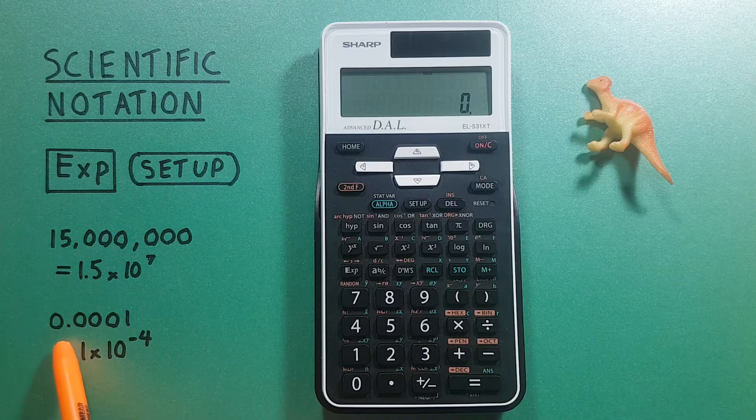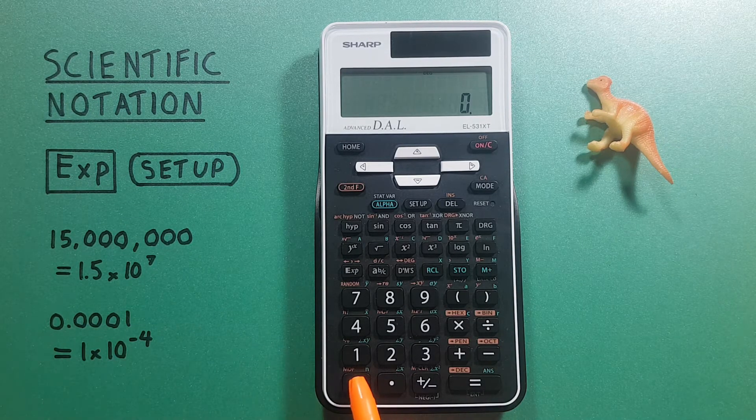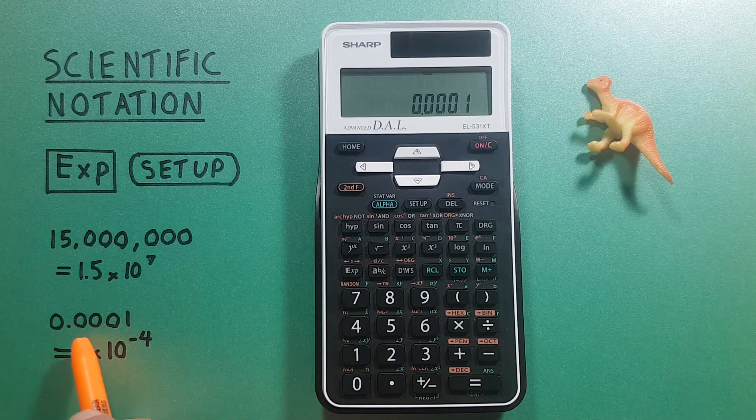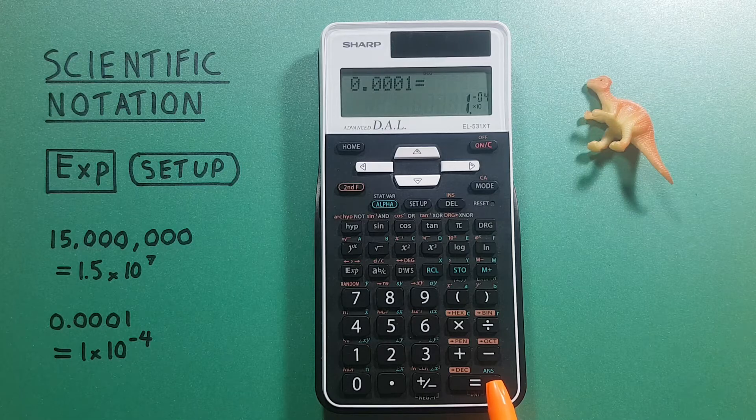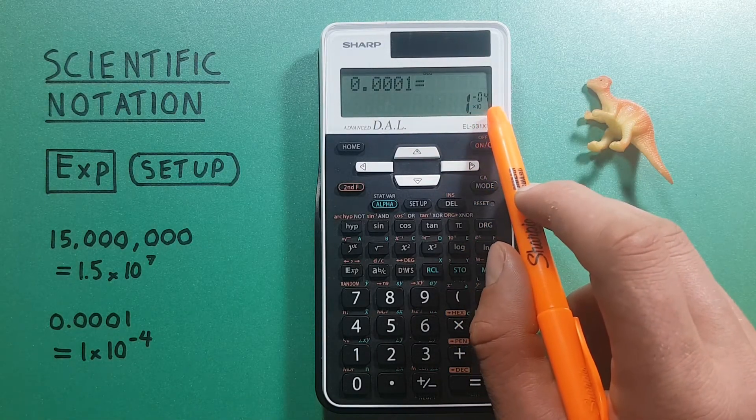So if we entered a small number, let's say 0.001 and enter, you can see it automatically changes this to 1 times 10 to the negative 4.